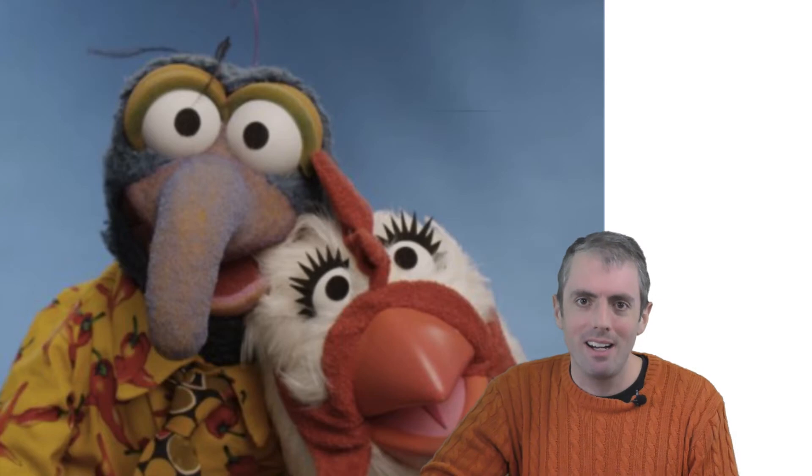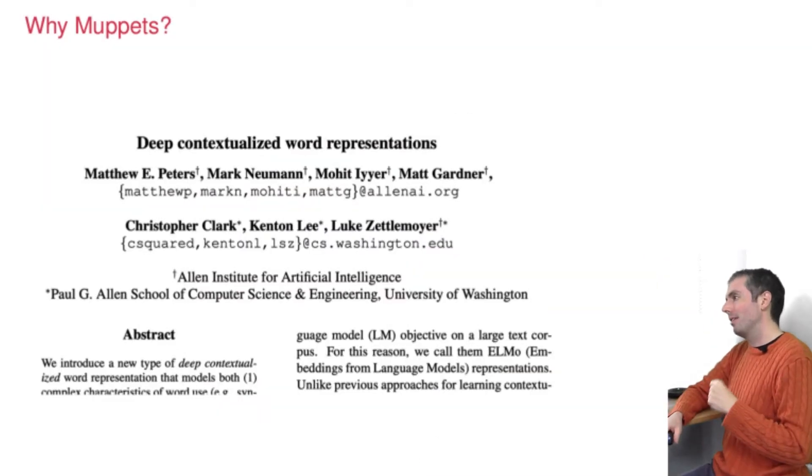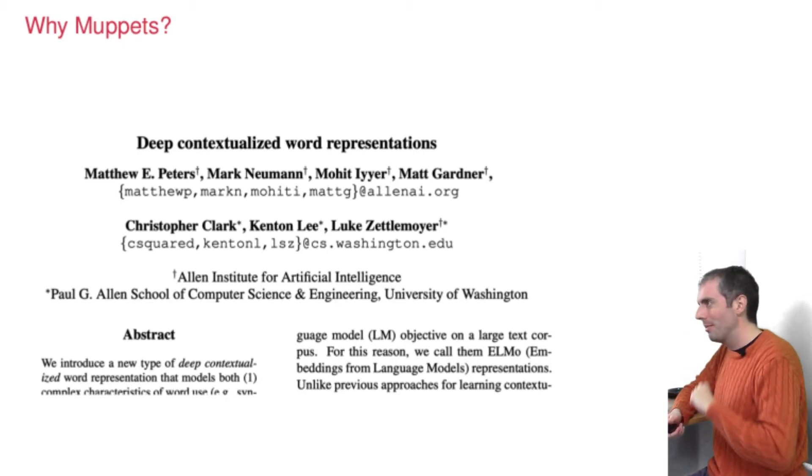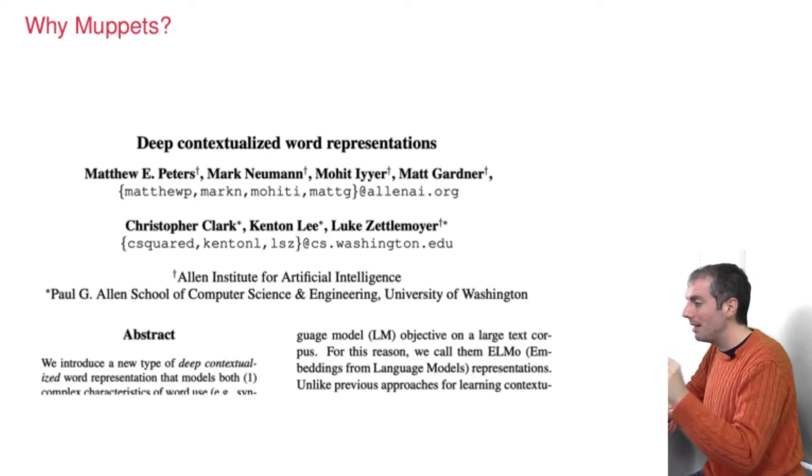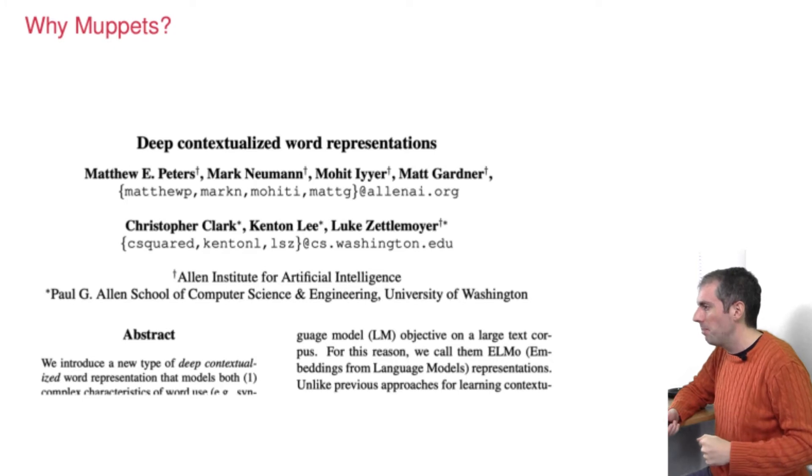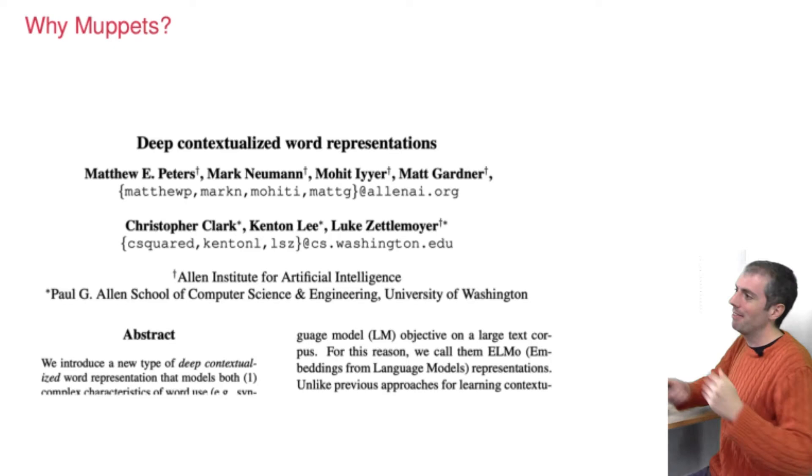Why Muppets? So it's not just that Muppets are awesome, though they are. The paper that got everything rolling was arguably the ELMO paper. Mohit, a University of Maryland graduate, is among many of the authors here on this paper. And they called this model ELMO because it's embeddings from language models. And this worked really well. It was a big leap forward. Having these contextual representations really did seem to help. And everybody after that wanted to name their neural language models after a Muppet.